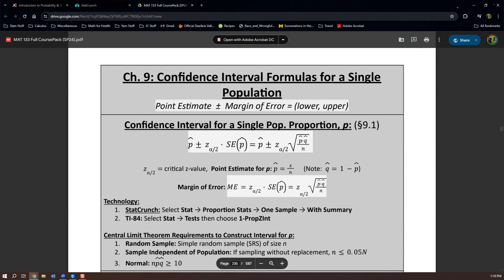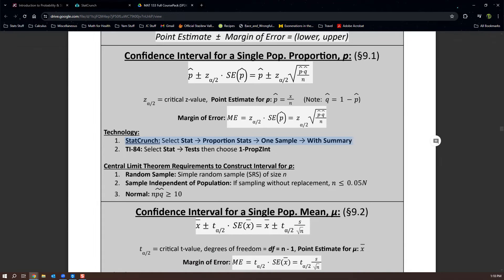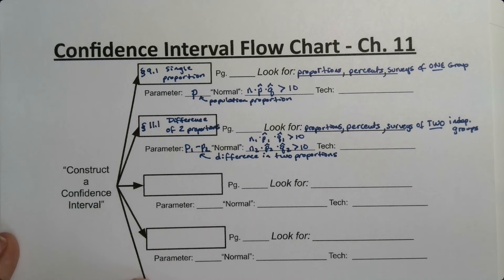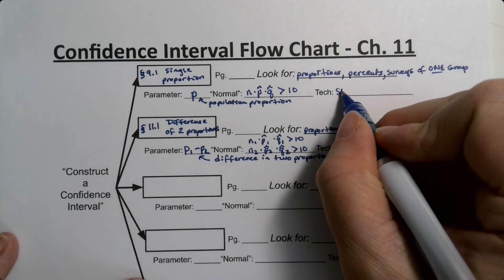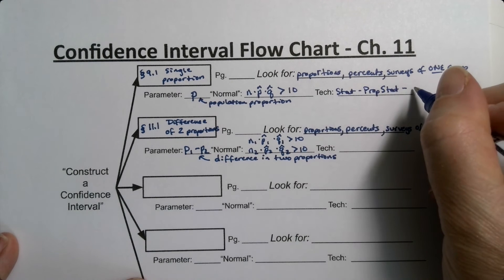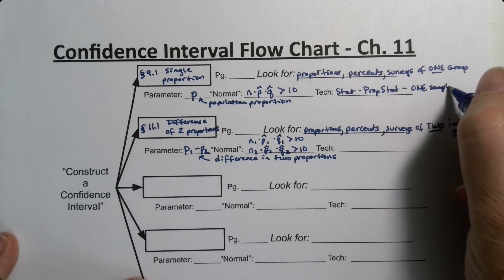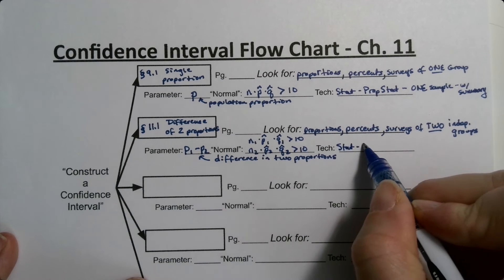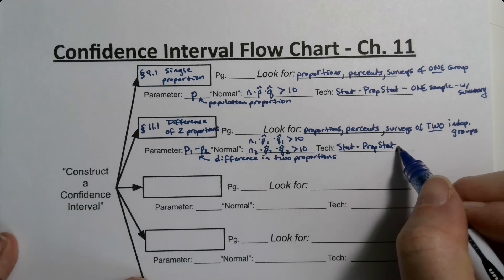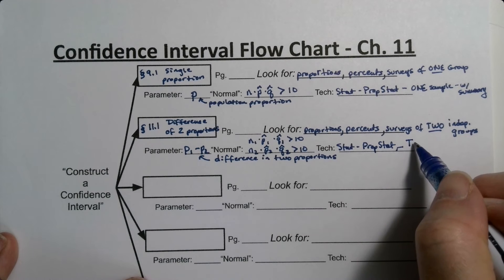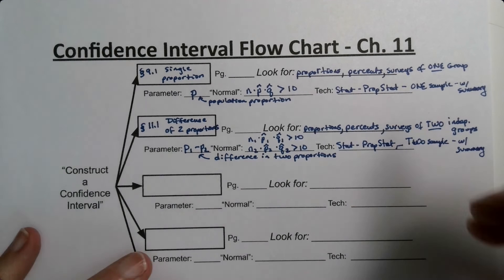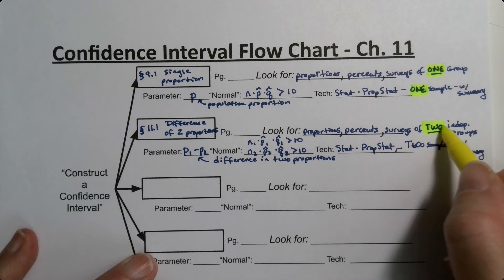For technology, chapter 9 uses STAT, proportion, STAT, one sample with summary. Chapter 11 uses STAT, proportion, STAT, two sample with summary. It's key to notice that the single-group interval uses one sample, and the two-group interval uses two samples.